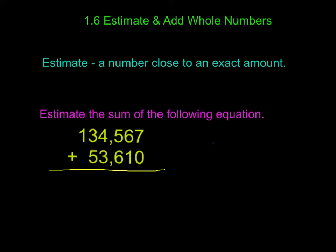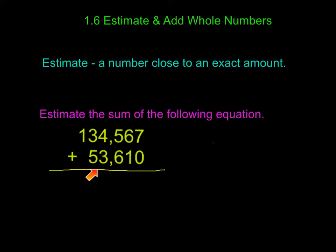For that, I am going to use rounding. Because this has a 10,000s place and our second number only has a 10,000ths place, I want to round them to the same place value. So I'm going to take 134,567 and round it to the nearest 10,000, and then take 53,610 and round it to the nearest 10,000. That will give me a reasonable estimate.